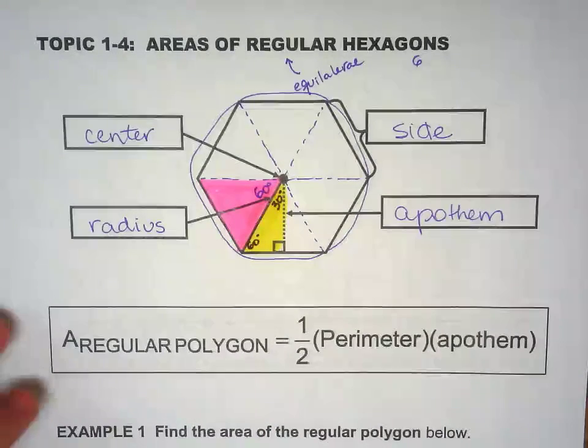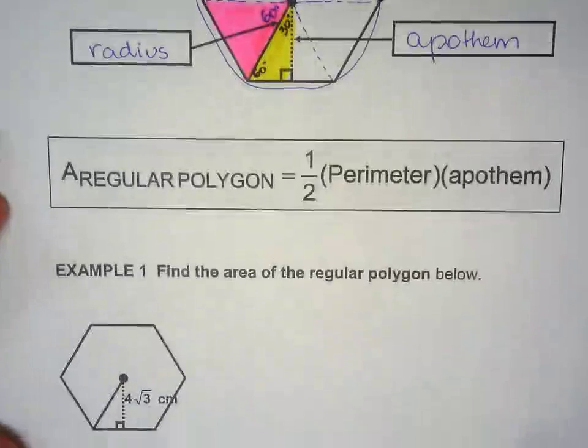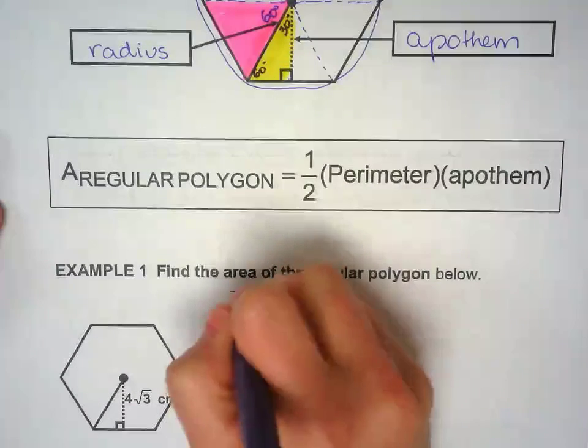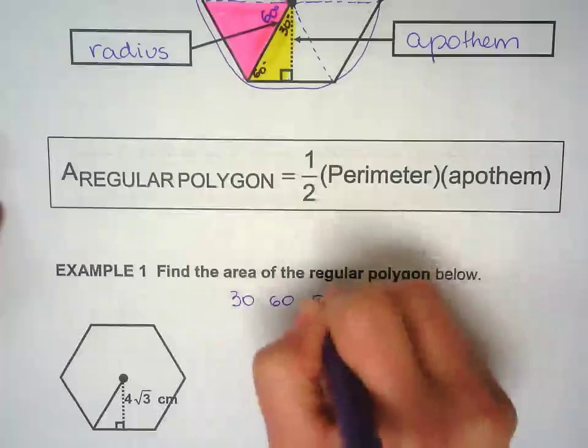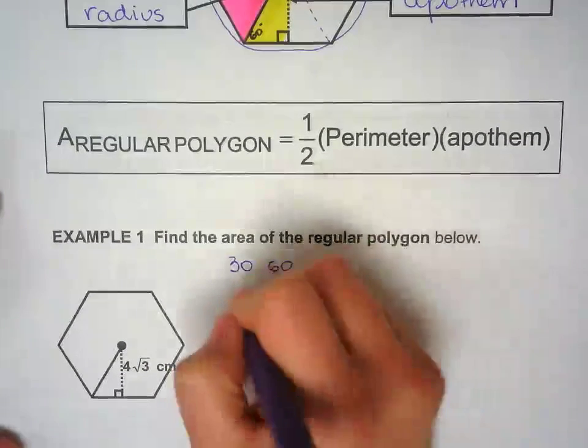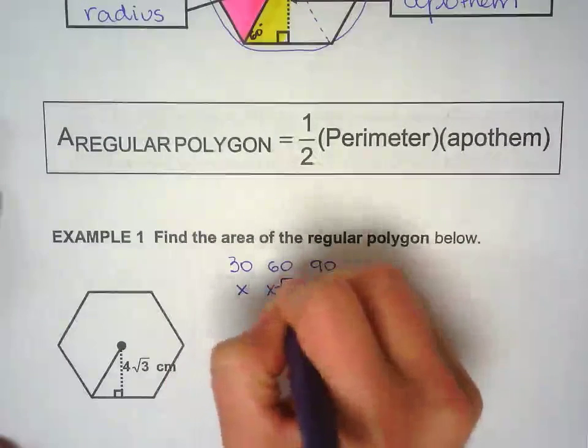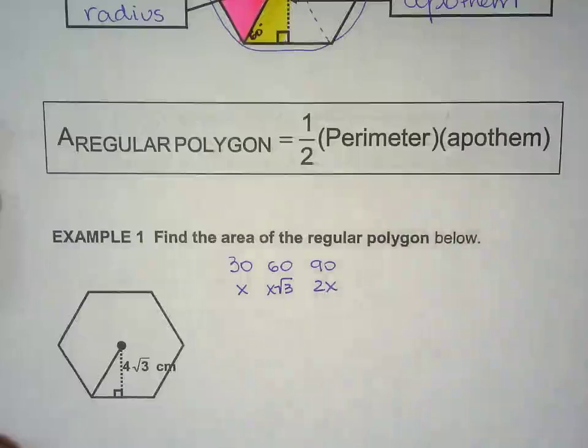Yeah, we're doing 30, 60, 90 triangle again. Fun. So first example, we have 30, 60, 90 triangle and we have the ratios x, x square root of 3, 2x.